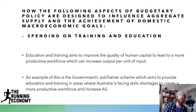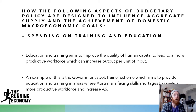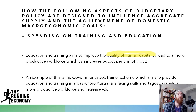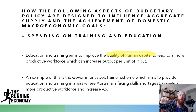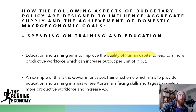Getting into spending on education and training: education and training aims to improve the quality of human capital, getting more GDP per hour worked — more output per unit of input. An example is the government's Job Trainer scheme, which aims to provide education and training in areas where Australia is facing skill shortages to create a more productive workforce and increase aggregate supply. This gives skills to unemployed people so they can get employed, increasing productive capacity and therefore increasing aggregate supply overall. More people employed means more likely to achieve full employment, more production means more economic growth, and more people able to be employed brings down cost of production and therefore helps achieve the goal of low inflation.